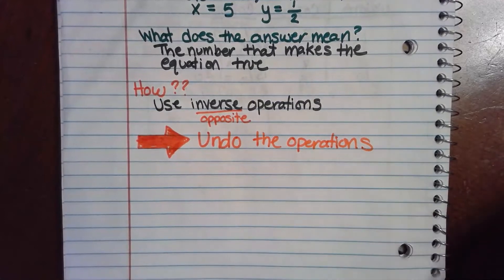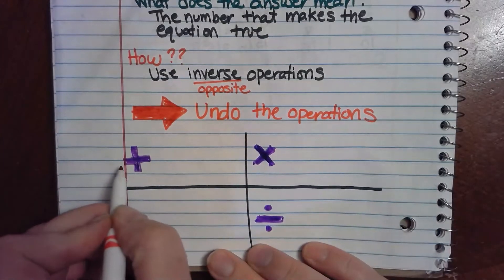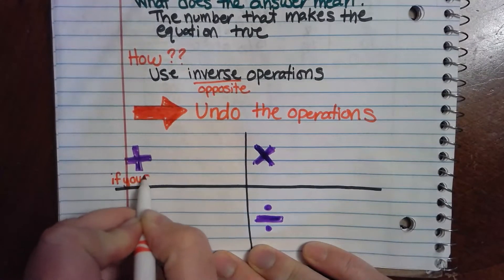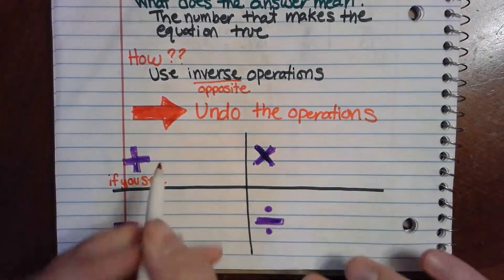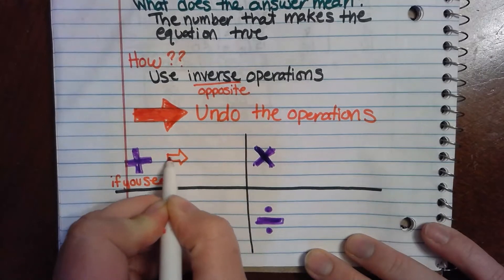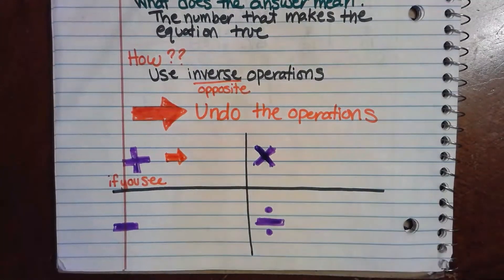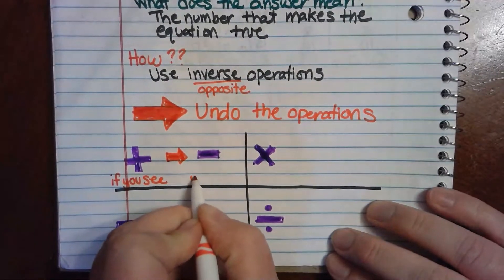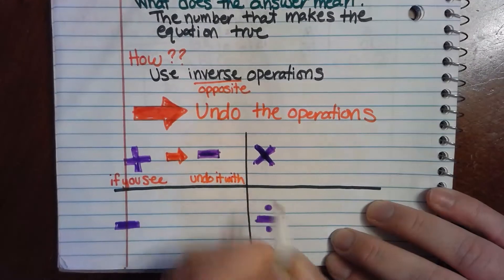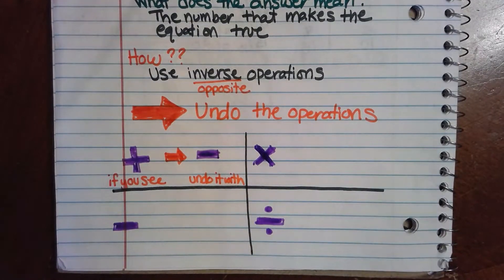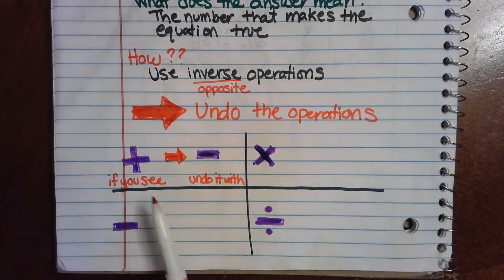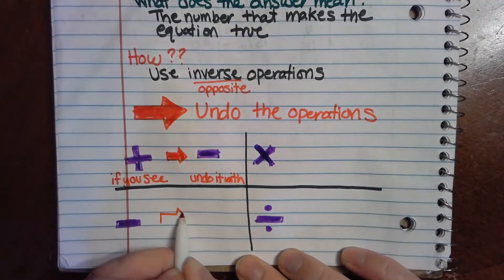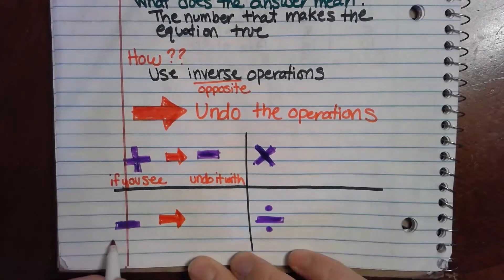Let me draw a table. If you see addition, how are we going to undo that? We're going to undo it with subtraction. Because if I have a positive five and I want to get rid of it — if I have five apples and I want to undo them, I take them all away. So if I see addition, I undo it with subtraction. If I see subtraction, we're going to undo that with addition.